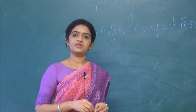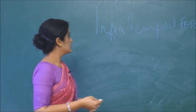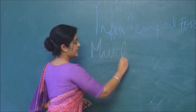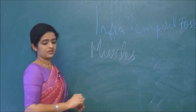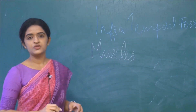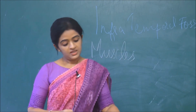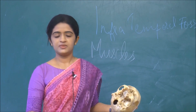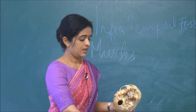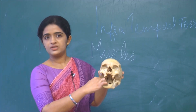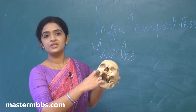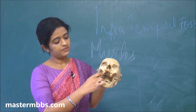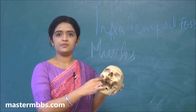Muscles of the infratemporal fossa — so what are the muscles of the infratemporal fossa? The muscles of the infratemporal fossa are arranged around the temporomandibular joint. We will talk about the temporomandibular joint in some other sessions. The temporomandibular joint is here, and you need muscles to control it, and these muscles are arranged in the infratemporal fossa.